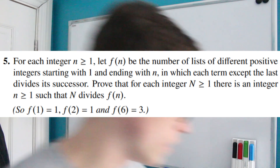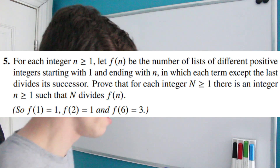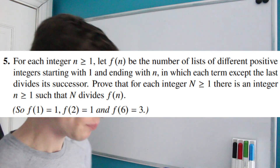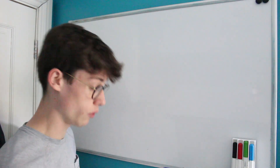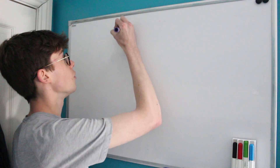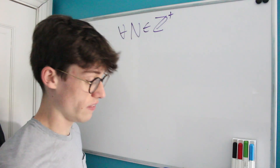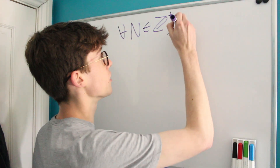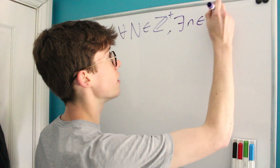...that for each integer capital N greater than or equal to 1, there is an integer lowercase n greater than or equal to 1 such that capital N divides f(lowercase n). So let's write out what they've told us and process it: for all big N that are positive integers, there exists a lowercase n which is a positive integer such that N divides our function.